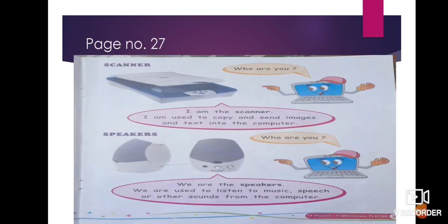Let's move further to page number 27 — scanner and speakers. We are done with printer: it is used to take out a print of whatever is displayed on the monitor, and there are three types — laser, inkjet, and dot matrix. Now let's look at what scanner and speaker are.